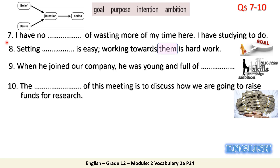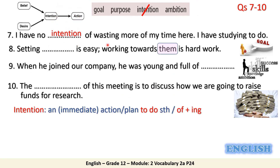For the next group of sentences from seven to ten, we've got four words: goal, purpose, intention, and ambition. Please pause and use your dictionary to study the difference between the four words. Number seven: I have no intention of wasting more of my time here — I have studying to do. When there is a belief or desire inside you, there must be an intention to do this action. Intention is an immediate action or plan to do something.